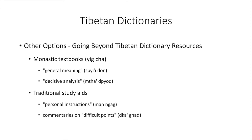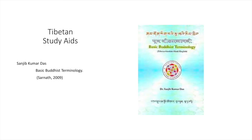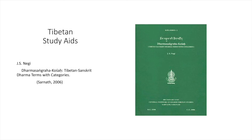A distinctive feature of Buddhist philosophy is its use of hierarchical lists of things. There is another genre of literature, Enumeration of Phenomena (Chuggi Namtang), that provides lists of these, and publications continue to come forth in this genre, some with English translations, if not Sanskrit and Hindi as well. Two such recent publications are Sanjib Kumar Das's Basic Buddhist Terminology and J.S. Nagy's Dharma Sangraha Kosha: Tibetan-Sanskrit Dharma Terms with Categories.